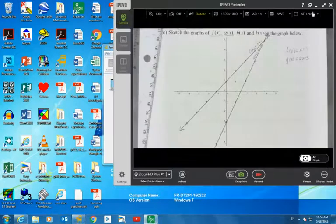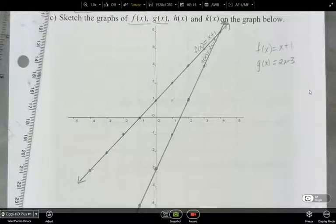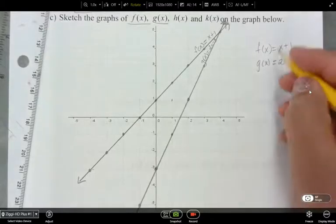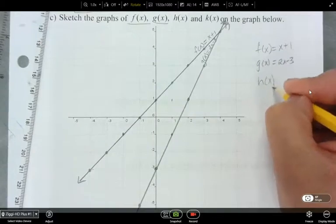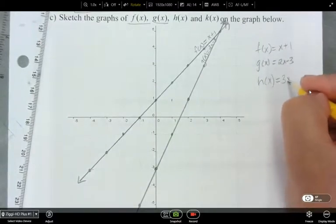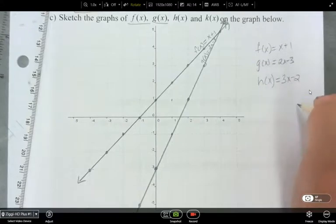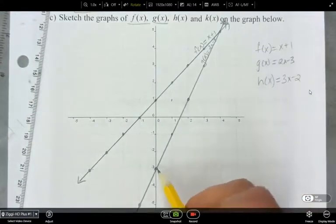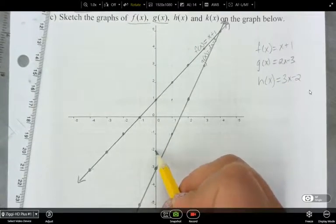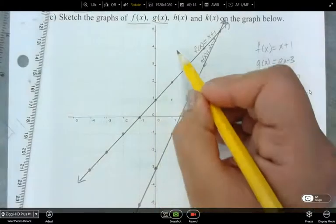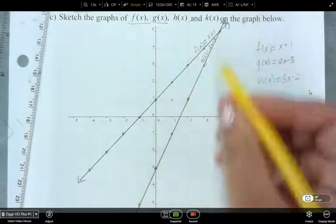Okay. So hopefully you've taken the chance to graph f of x and g of x. So this is what my f of x and g of x look like. Now, next we're going to look at what the graph of h of x is. So h of x, we know the equation is 3x minus 2. So we have an idea of what it probably will look like, right? We're going to have a y-intercept of negative 2, and then we're going to have a slope of up 3 over 1. So we have an idea of what it's going to look like.